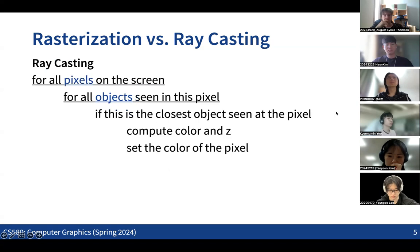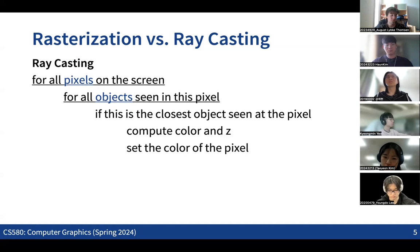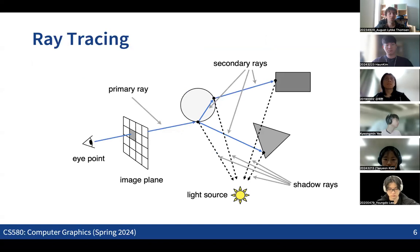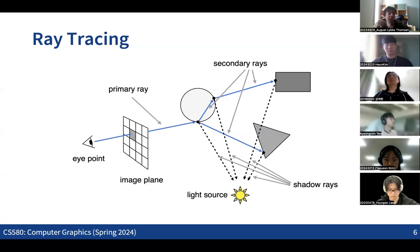Ray casting is kind of the opposite of rasterization. For each pixel on the screen, we shoot a ray into 3D space, check the intersection point with 3D objects, and fetch information from the 3D scene. Ray tracing is a more complicated framework — it's not just checking intersection with the ray and objects, but actually backtracing all the paths by following secondary rays. For each intersection point, we also see where the ray actually came from — it's more about reverse engineering.